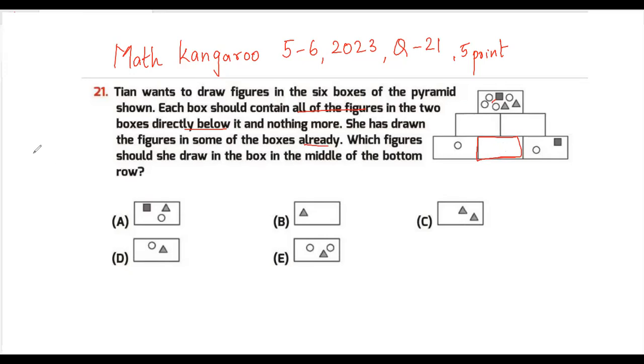Whatever will come here will be the sum of the figures contained in the boxes below. For example, let's say if you go with option A, which has a square, triangle, and circle, that means this box will have two circles (one from each), a square, and a triangle. And this one will have two circles, two squares, and a triangle.